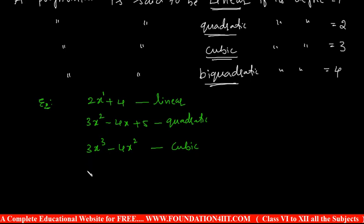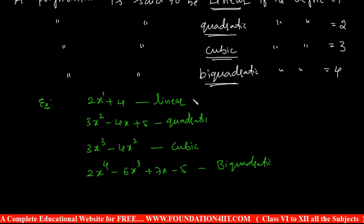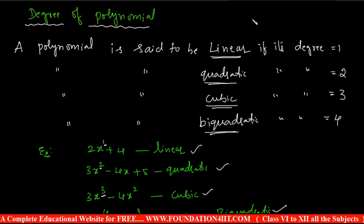If the highest power is four, it is called bi-quadratic. For example, 2x⁴ − 6x³ + 7x − 5 is bi-quadratic. So to recap: linear — highest power 1; quadratic — highest power 2; cubic — highest power 3; bi-quadratic — highest power 4. These are the main basics about polynomials. Next, let us see how to do sum and difference of two polynomials — how to do addition and subtraction.